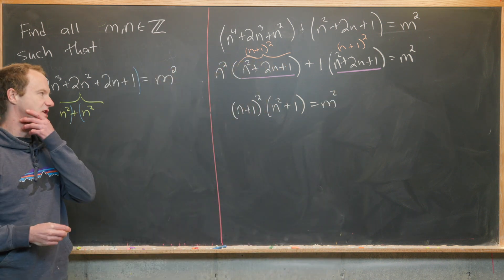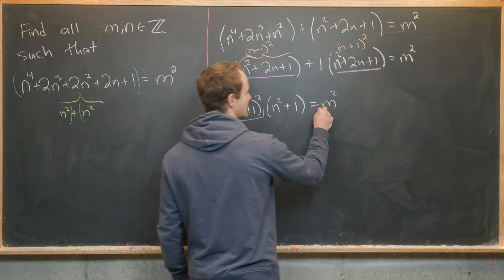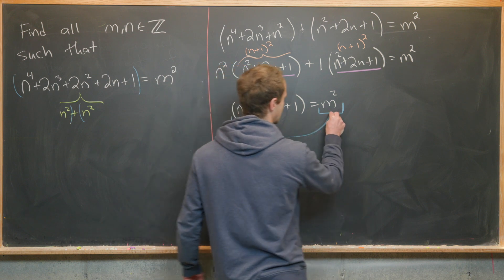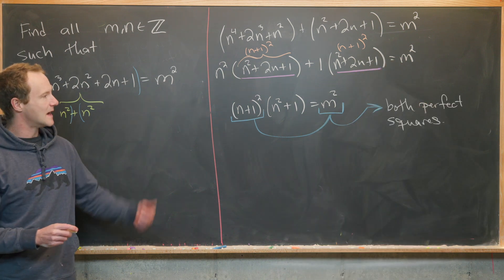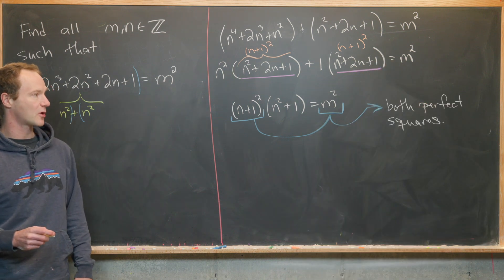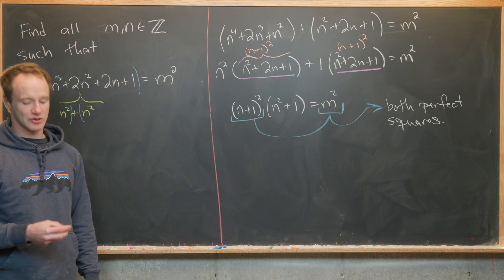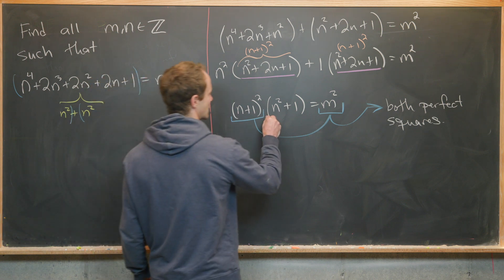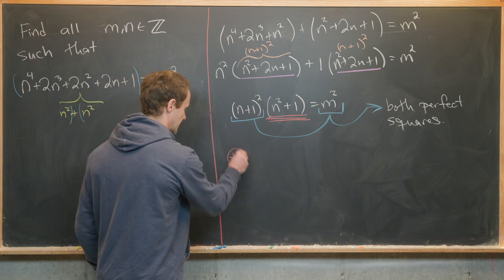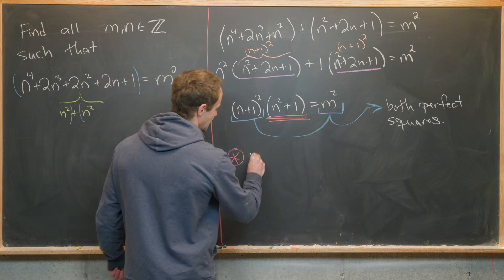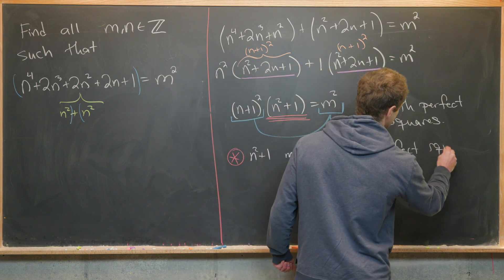Now let's look at this and notice that this term I'm underlining in blue and this other term I'm underlining in blue, these are both perfect squares. Since those are both perfect squares, that means the only remaining object in this equation must also be a perfect square. In other words, this one I just underlined three times in red must also be a perfect square. So n squared plus 1 must be a perfect square.